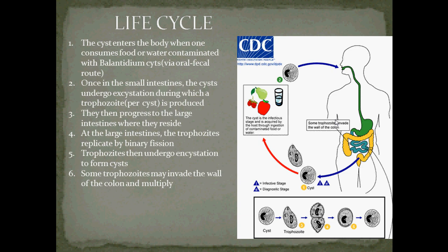Cysts enter the body when one consumes water or food contaminated with Balantidium coli cysts, via the oral-fecal route. Once in the small intestines, the cysts undergo excystation, during which a trophozoite is produced per cyst. They then progress to the large intestines, where they reside, and the trophozoites begin replicating by binary fission. The trophozoites then undergo encystation to form cysts, and the cycle continues.